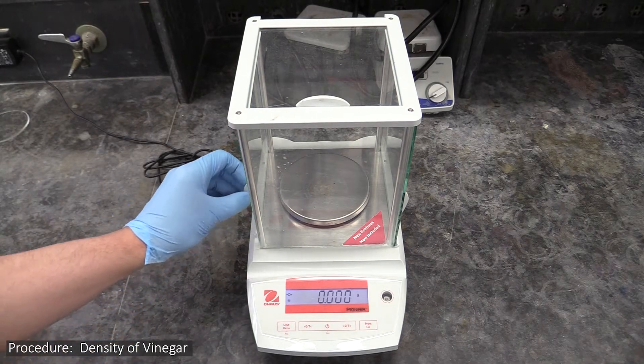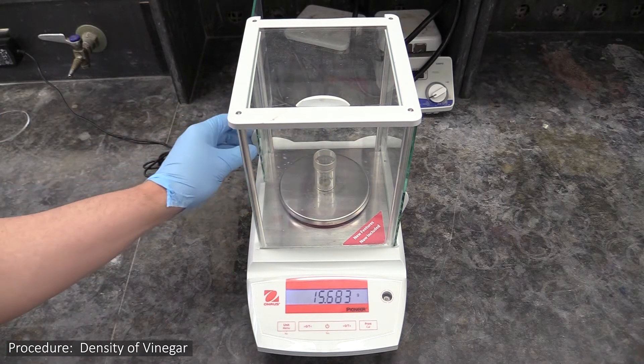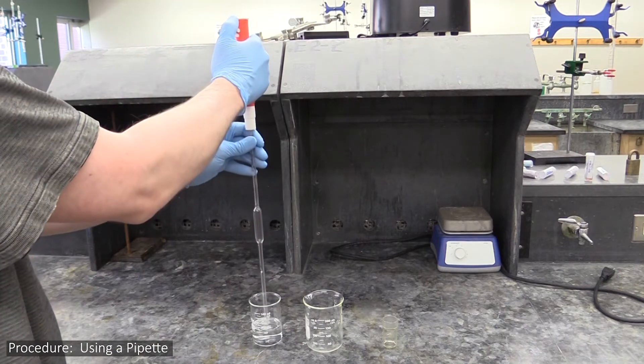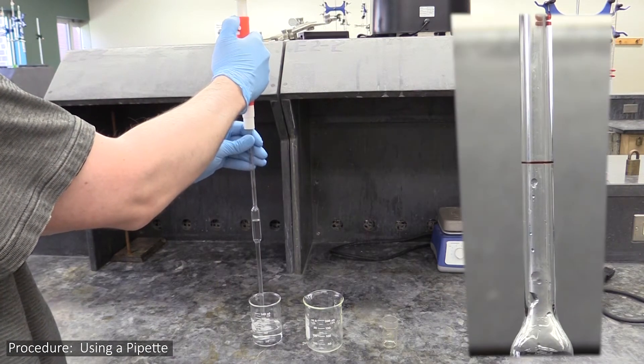Here's how you'll take the data you'll need to calculate the vinegar's density. You will first weigh an empty weigh bottle, then pipette a sample of vinegar into it. To get the vinegar into the pipette, use a pump to draw it up just past the index line.